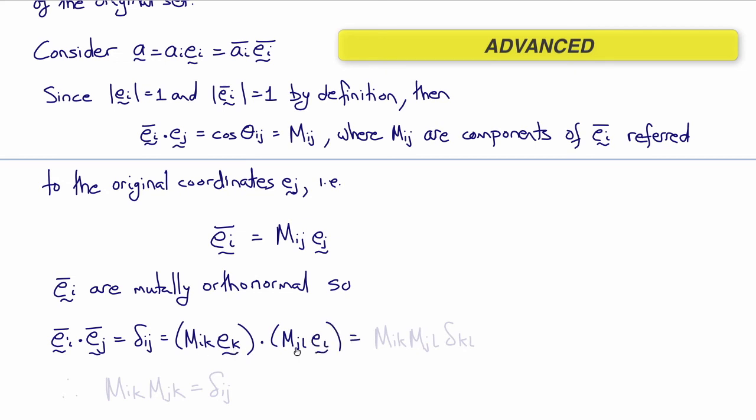Rearranging this: mi k times mj l times ek dot el, which is delta kl. Delta kl just turns k into an l or l into a k, which simplifies to mi k mj k, or equals delta ij.